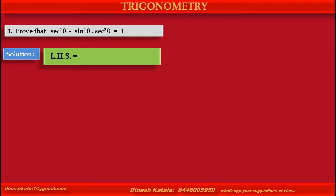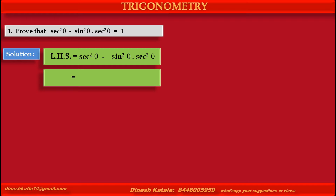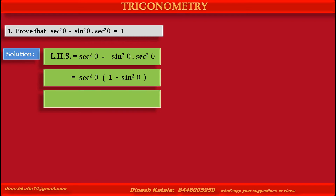Left hand side is equal to: first term is sec squared theta minus second term is sin squared theta into sec squared theta. This is equal to sec squared theta is common, into bracket 1 minus sin squared theta.